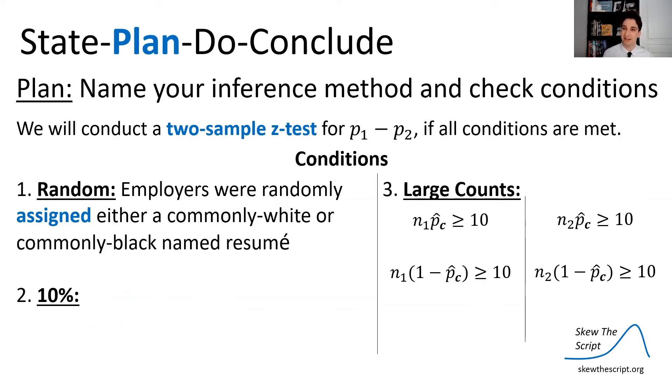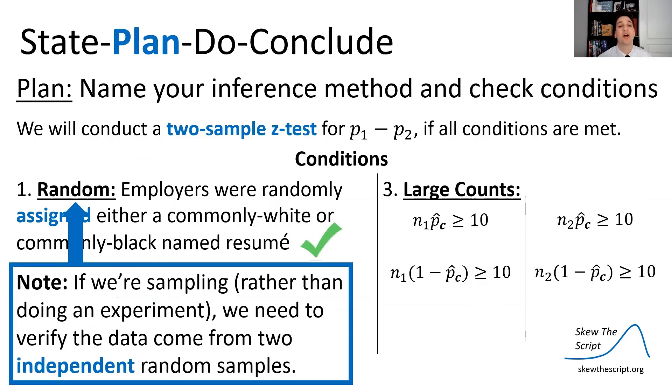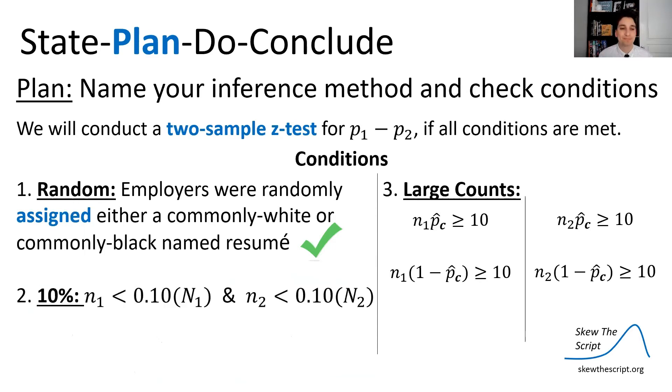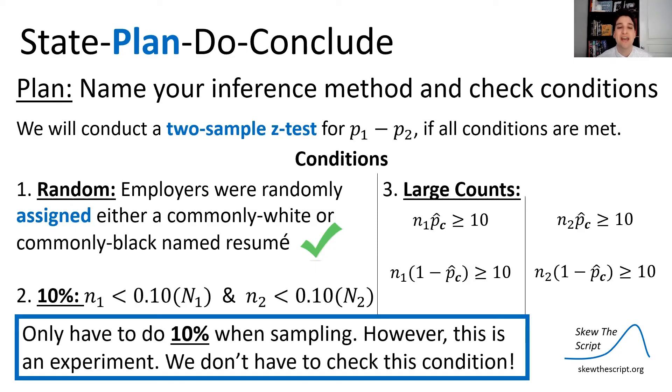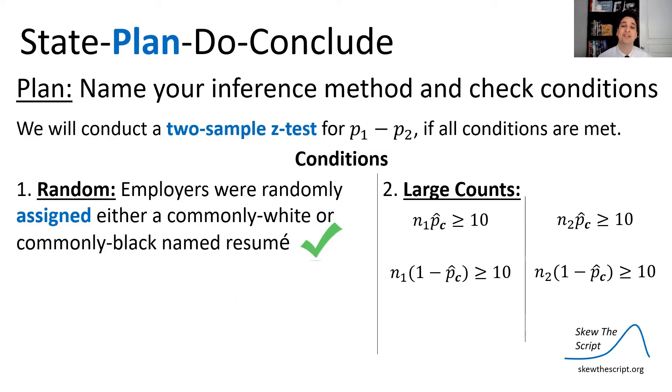So random. Employers were randomly assigned, because this was an experiment, not a sample, either a commonly white name resume or a commonly black name resume, so that was satisfied. 10%, sorry. Next, one thing to point out, if we're sampling rather than doing an experiment, we need to verify that the two samples were independent random samples, but because this is an experiment, we don't have to verify that, but if you're doing a sampling with two samples, you need to verify those samples are also independent, not just random. Now, 10% condition, we only need to check this 10% condition where the sample size is less than one-tenth of the population size if we're doing a sample, but in this case, we're doing an experiment with random assignment, so we do not need to check that condition.